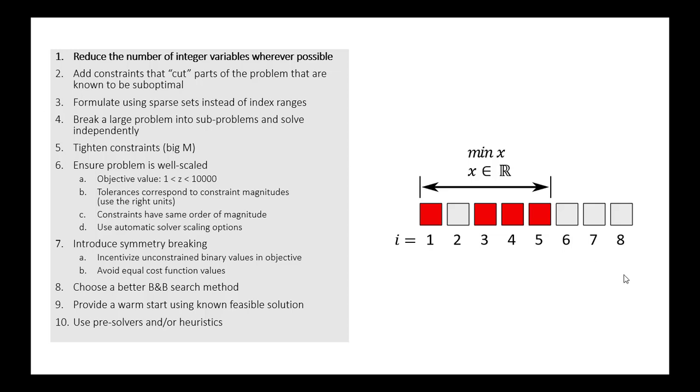So here we have an example of how this might actually look. This is a very simple example. In this example, we have states that are indexed with the index i. So state 1 is represented here. So we have the state 1 taking the value 1, which is red. State 2 is taking the value 0. 3 is 1. 4 is 1. 5 is 1. And so on.